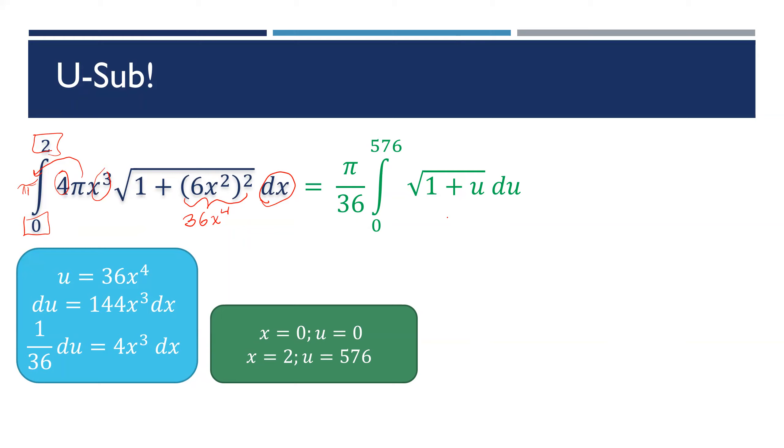When we take the integral that would be 1/54 times (1 + u) to the 3/2, because square root is the exponent 1/2. So you add one more, that's 3/2. We are evaluating it from 0 to 576.